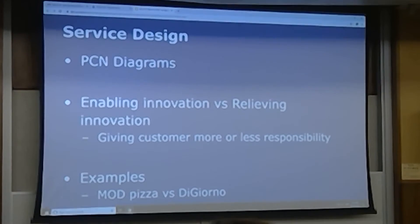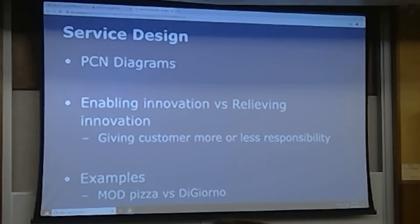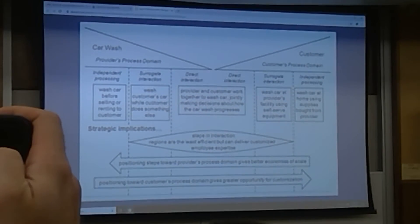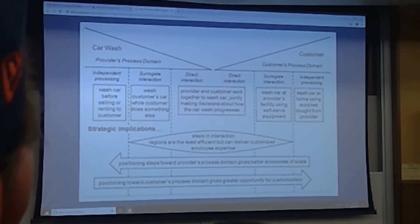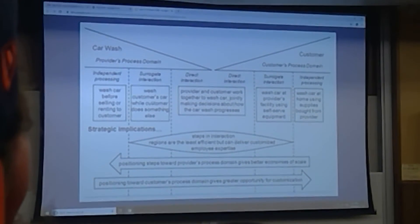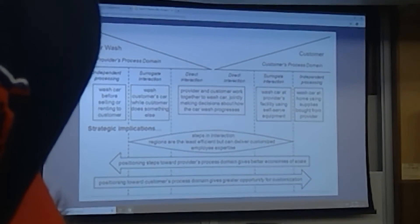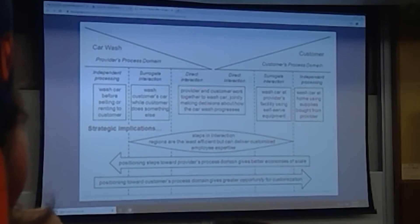Quick examples — these kind of resemble some of the test questions. So if you take DiGiorno pizza, where it's frozen and you buy it at the store, what regions of the PCN diagram would be in play? Surrogate — because the store pre-processed the pizza. DiGiorno made that pizza for you, made that asset, and you take it home and do things with it yourself. A better question might be: if you're face-to-face with a Mod Pizza employee and you're telling them what you want while they're making the pizza, what kind of region would that fall under? Direct — perfect.